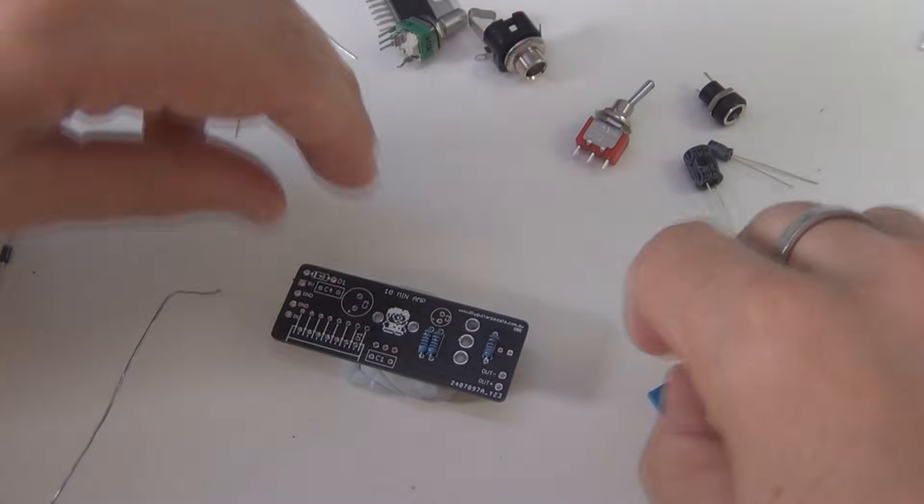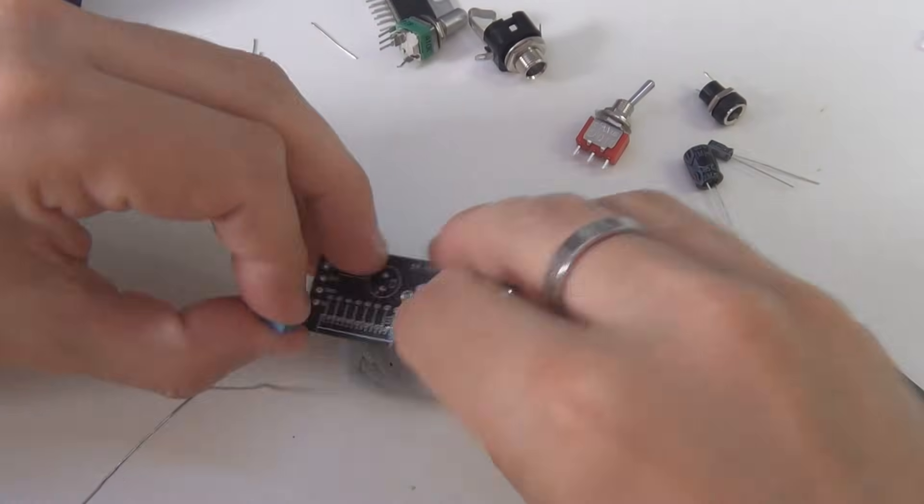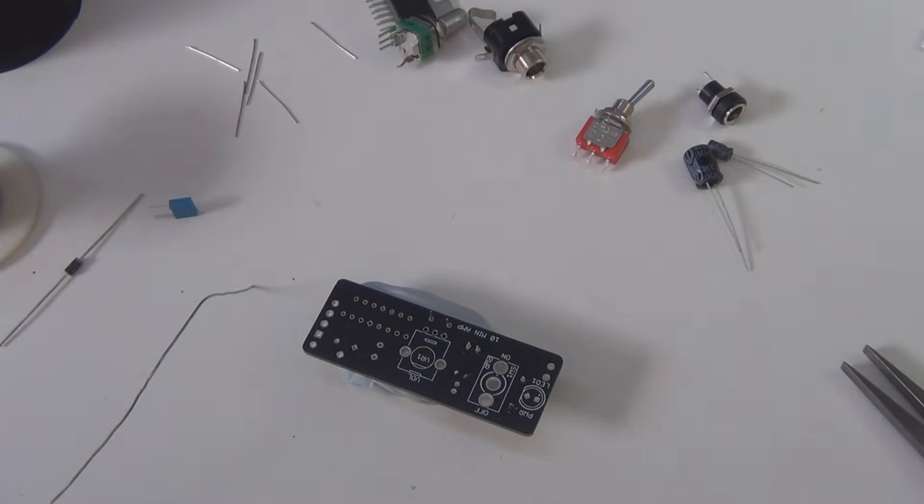Next we'll do the film capacitors. These capacitors are the exact same value, so it doesn't matter which position you put them in. They'll go in C1 and C4.